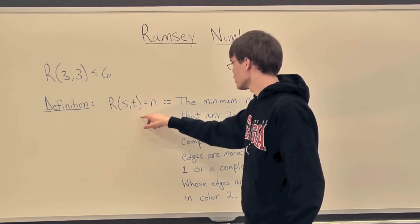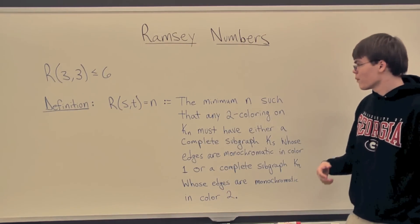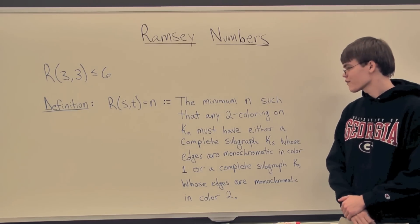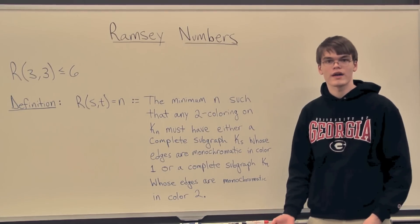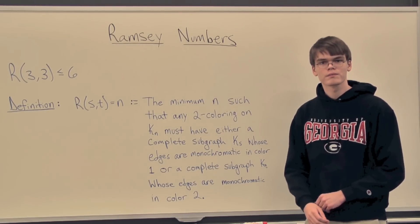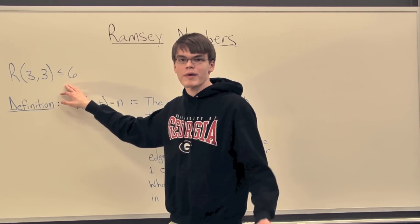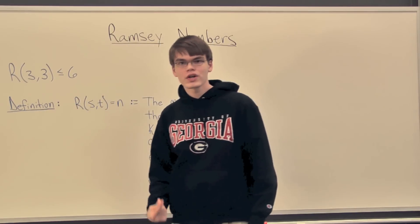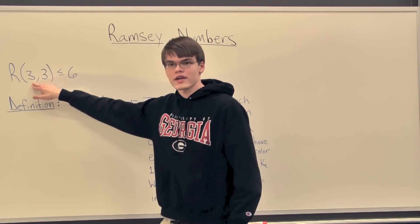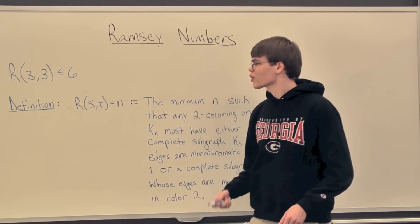We have our definition. When we say that R(s,t) is equal to n, that gives us the minimum n such that any two-coloring on K_n must have either a complete subgraph K_s whose edges are monochromatic in color 1, or a complete subgraph K_t whose edges are monochromatic in color 2. So when we say R(3,3) is less than or equal to 6, that means there exists a minimum n that's at most 6, such that any two-coloring on the complete graph on those n vertices will have a monochromatic K_3 — in other words, a monochromatic triangle — in either color.